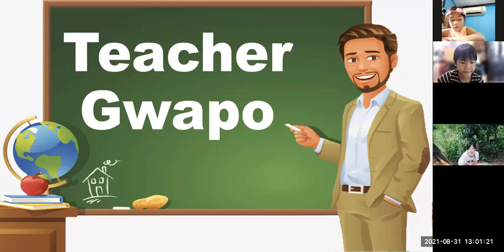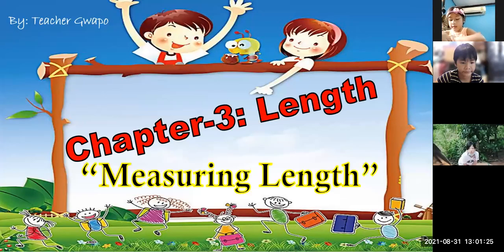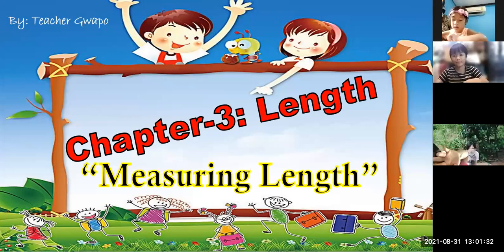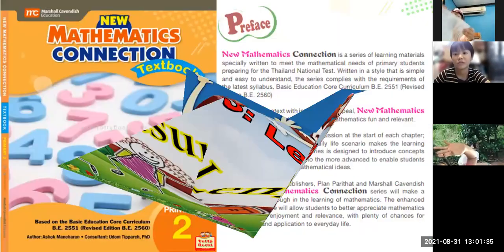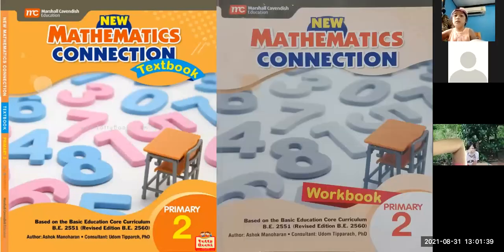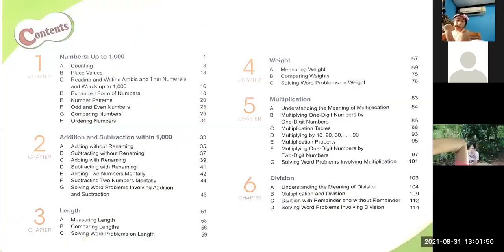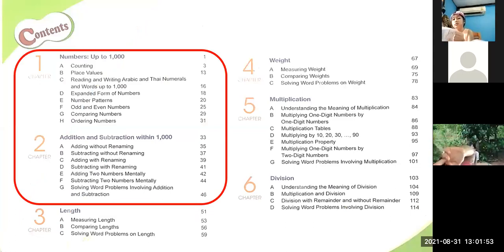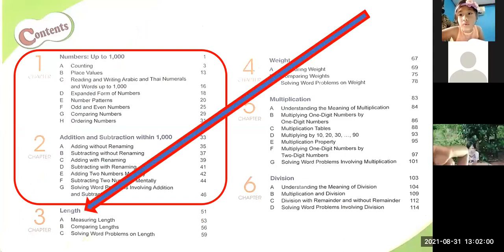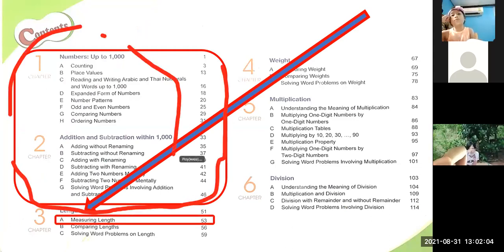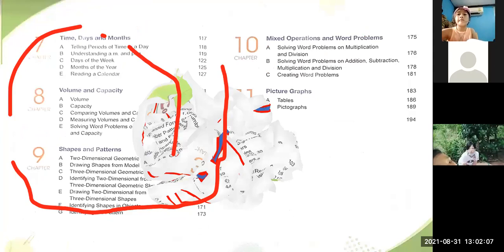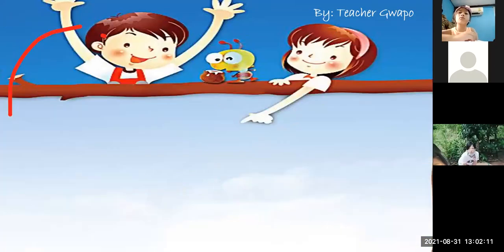My name is Teacher Guapo, your math teacher. We are on Chapter Three about length, and we are talking about measuring. We will focus on Exercise One about measuring length. Chapter One and Chapter Two are finished — numbers up to one thousand, and addition and subtraction within one thousand. Now we are in Chapter Three about length.